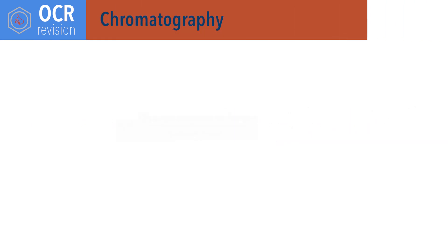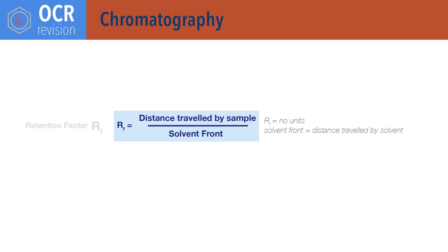For chromatography. Rf equals distance travelled by sample divided by solvent front, where the solvent front is the distance travelled by the solvent. Rf, or retention factor, values have no units.